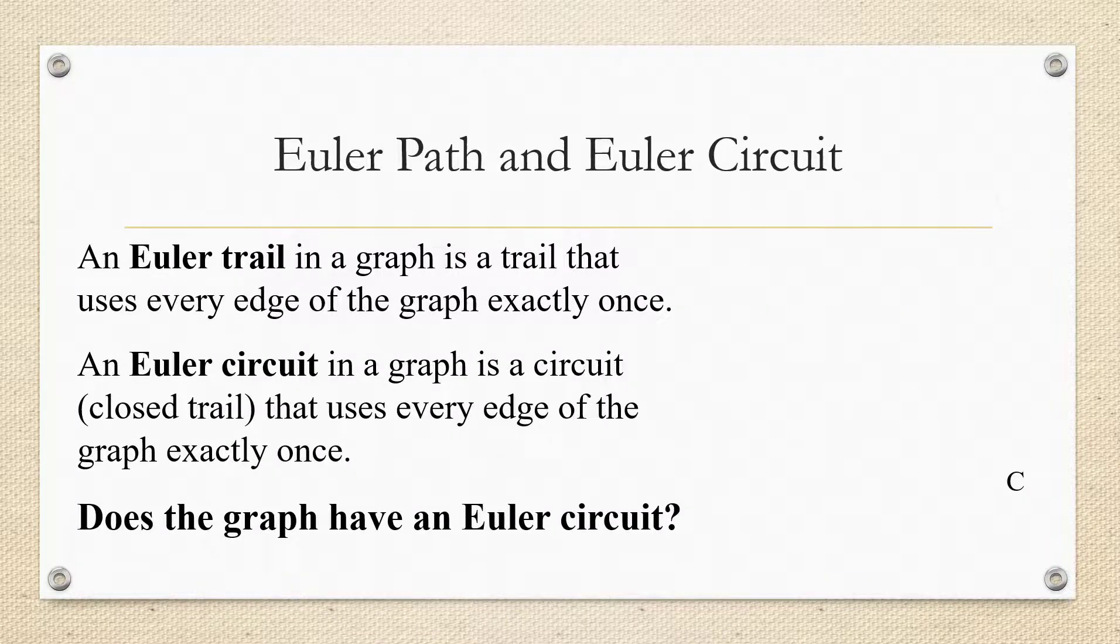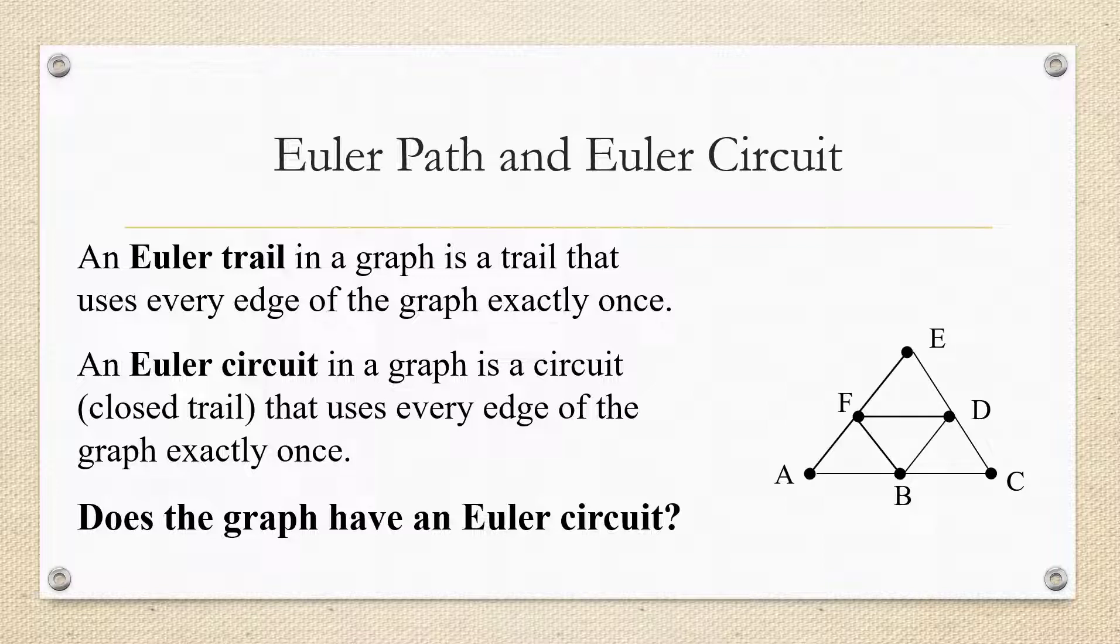I also want to remind you that we've talked about in previous videos what an Euler trail is. An Euler trail in a graph is a trail that uses every edge of the graph exactly once, and an Euler circuit is an Euler trail that begins and ends at the same vertex. So in this video, we're talking about does a graph have an Euler circuit, a trail that goes through the graph that visits every edge of the graph exactly once. So here, for example, is a graph. We might ask you, does the graph have an Euler circuit?